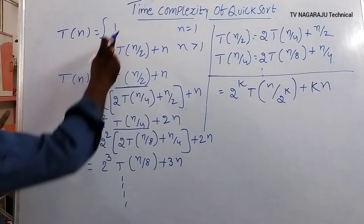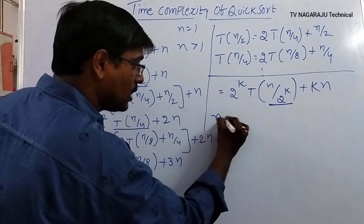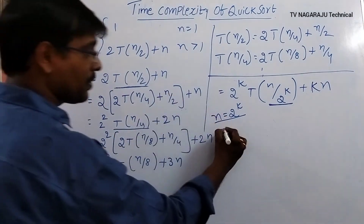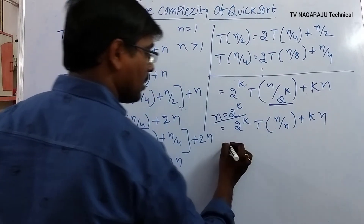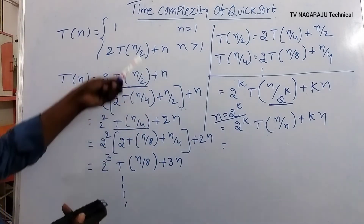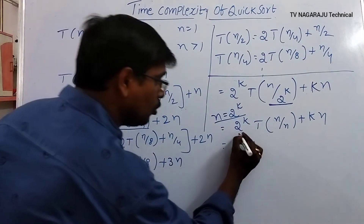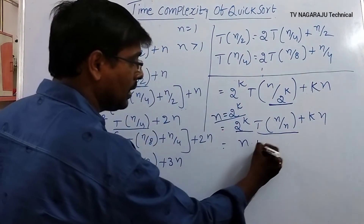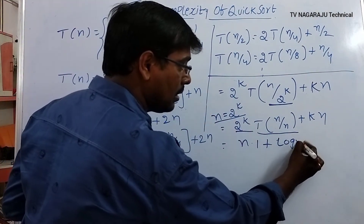The base condition is n = 1. This means n/2^k must equal 1, so n = 2^k, which gives k = log n. Substituting: T(n) = n·T(1) + k·n = n·1 + n·log n. The answer must be expressed in terms of n.